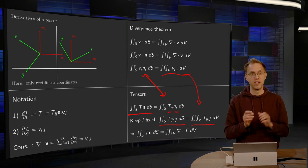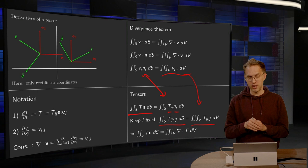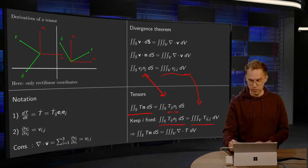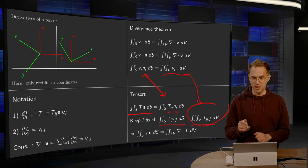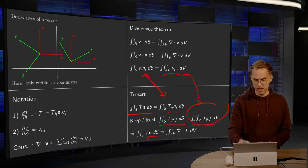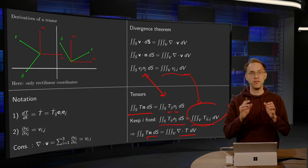So the divergence theorem for T dot n dS will become a triple integral T_ij,j over the volume V. Or you can rewrite this as the integral T dot n dS equals the integral of divergence of T dV.